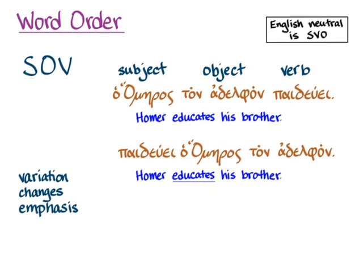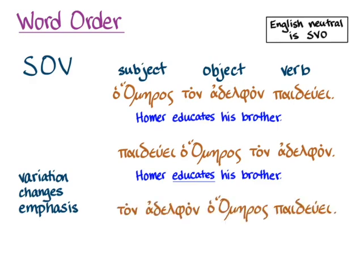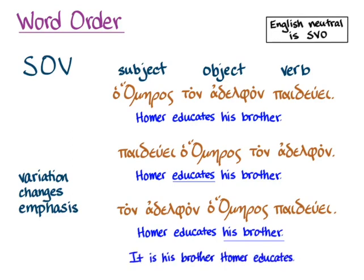Or we could move the brother to the beginning: 'ton adelphon ho Homeros paideue.' Then the emphasis is something more like 'Homer educates his brother,' or perhaps it answers the question, 'Whom is Homer educating?' — 'His brother is whom Homer is educating,' or 'It is his brother Homer educates.'